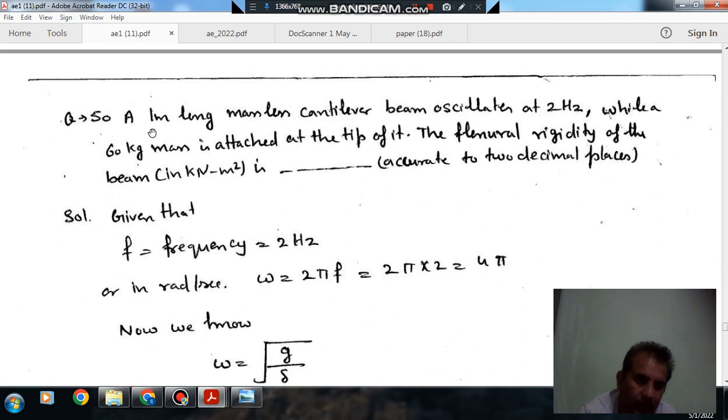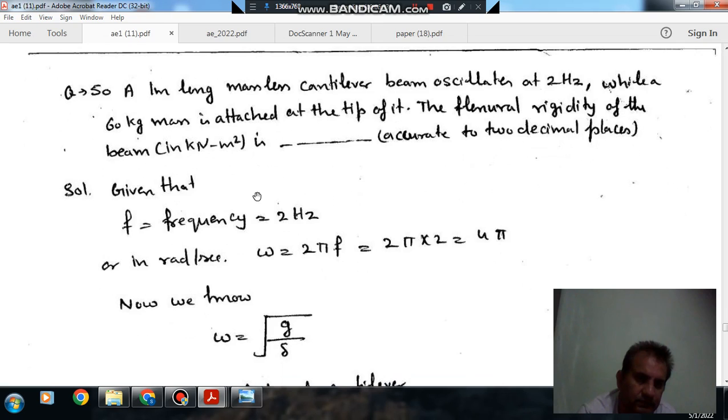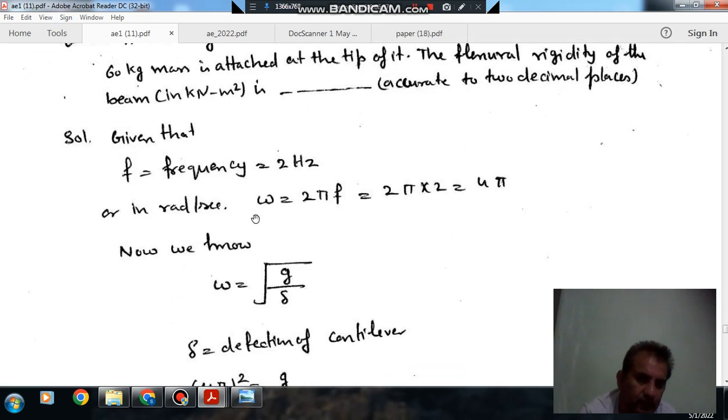Next, a 1 meter long massless cantilever beam oscillates at 2 Hz while a 60 kg mass is attached at the free end. The flexural rigidity of the beam in kN meter square is accurate to 2 decimal places. Given that the frequency f is 2 Hz, omega is given as 2 pi f, so 2 pi into 2, this is 4 pi.